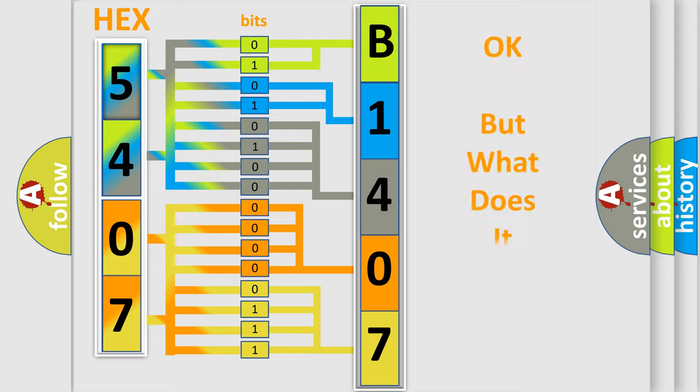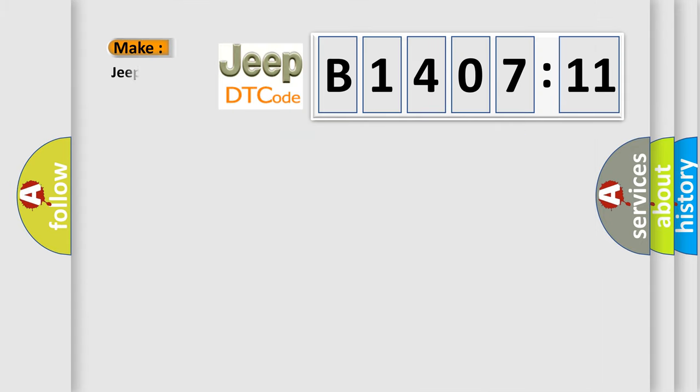The number itself does not make sense to us if we cannot assign information about it to what it actually expresses. So, what does the diagnostic trouble code B140711 interpret specifically, Jeep car manufacturers?